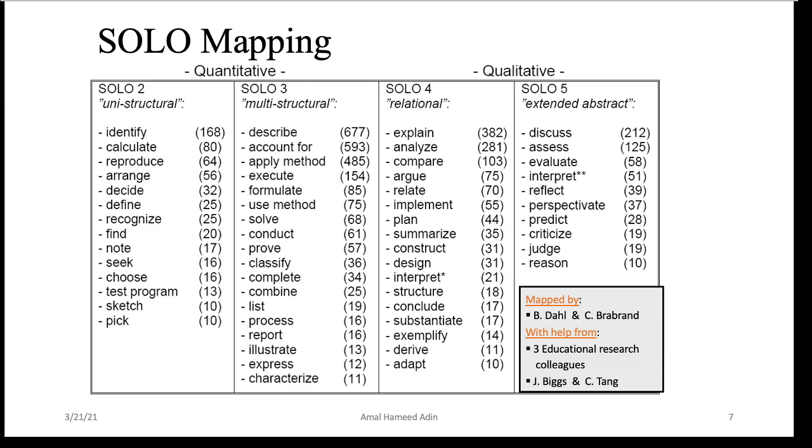If we can see here in the SOLO mapping, SOLO two and three, as we said, it deals with quantity—how much information the student knows, how much knowledge the students have. Is it uni, is it one or more, or multi? So verbs like this that the teachers can use: for example, the first level the students can identify, decide, find, choose. While in SOLO three, which is multi-structural, in this level the students can describe, solve, complete, list.